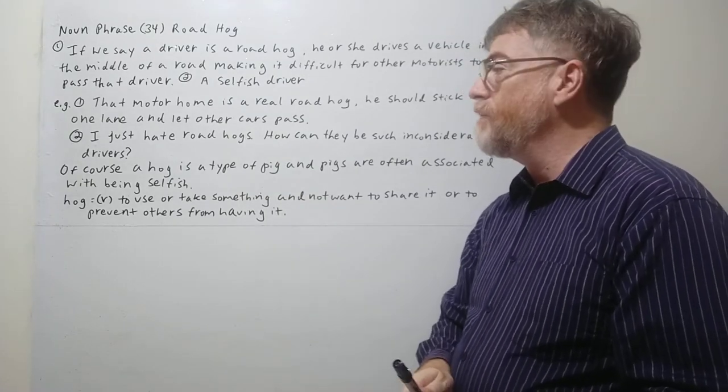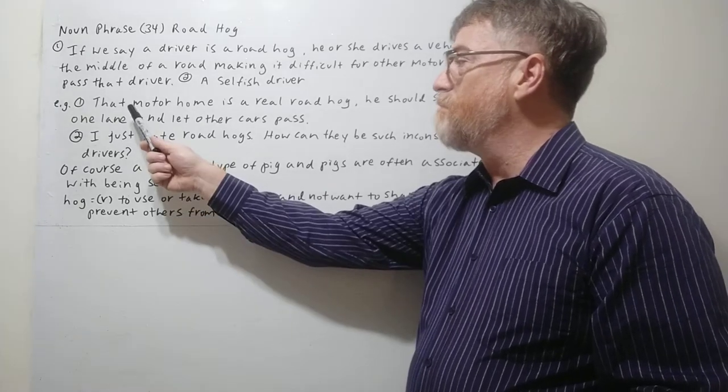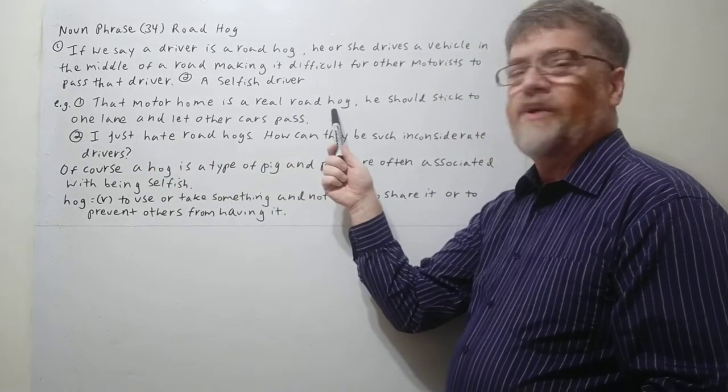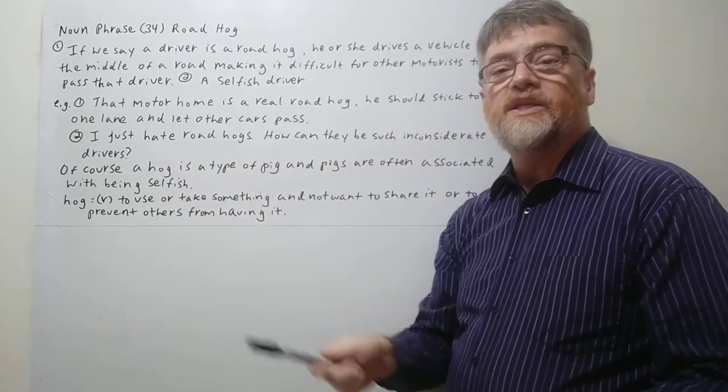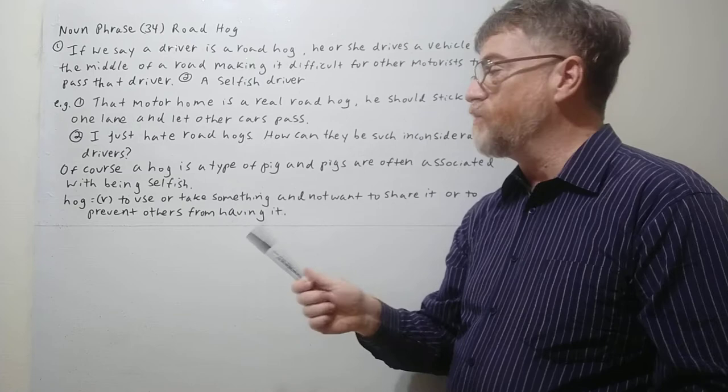Let's look at example number one. That motorhome is a real road hog. He should stick to one lane and let other cars pass. That's one way we use it.